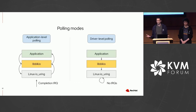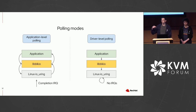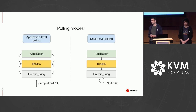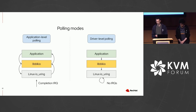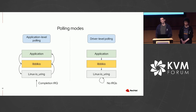You might be thinking: why implement two modes if driver-level polling is obviously better? The answer is that with application-level polling, if the application keeps calling io_uring, that thread can also do other things — like wait for a socket or something else. But when you do driver-level IO polling, you're kind of stuck to monitoring that one device, and any other events you're waiting for need another thread.